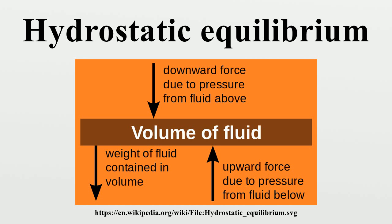If the density is ρ, the volume is V, and g is the standard gravity, then the volume of this cuboid is equal to the area of the top or bottom times the height. By balancing these forces, the total force on the fluid yields a sum that equals zero if the fluid's velocity is constant.